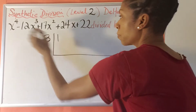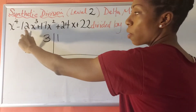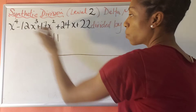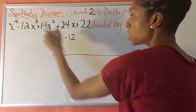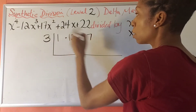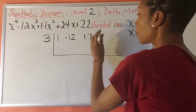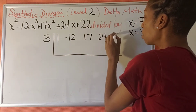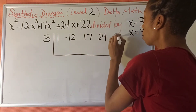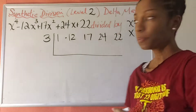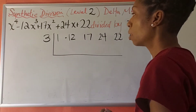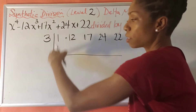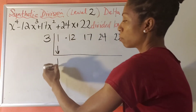So we put a 1. This coefficient is negative 12. This coefficient is 17. This coefficient is 24, and this constant is 22. The rest of the process: we always bring the first number straight down.